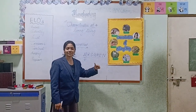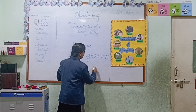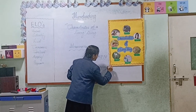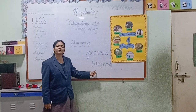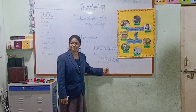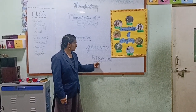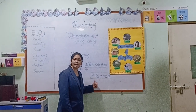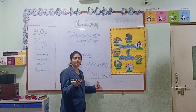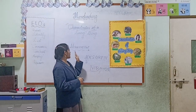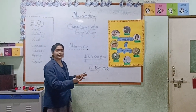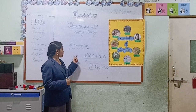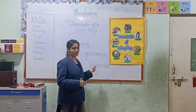I will tell you another example — VIBGYOR. This word helps us remember the colors in the rainbow: Violet, Indigo, Blue, Green, Yellow, Orange, and Red. So this technique can be in the form of a word, sentence, or picture. I hope this technique will help you in your studies.